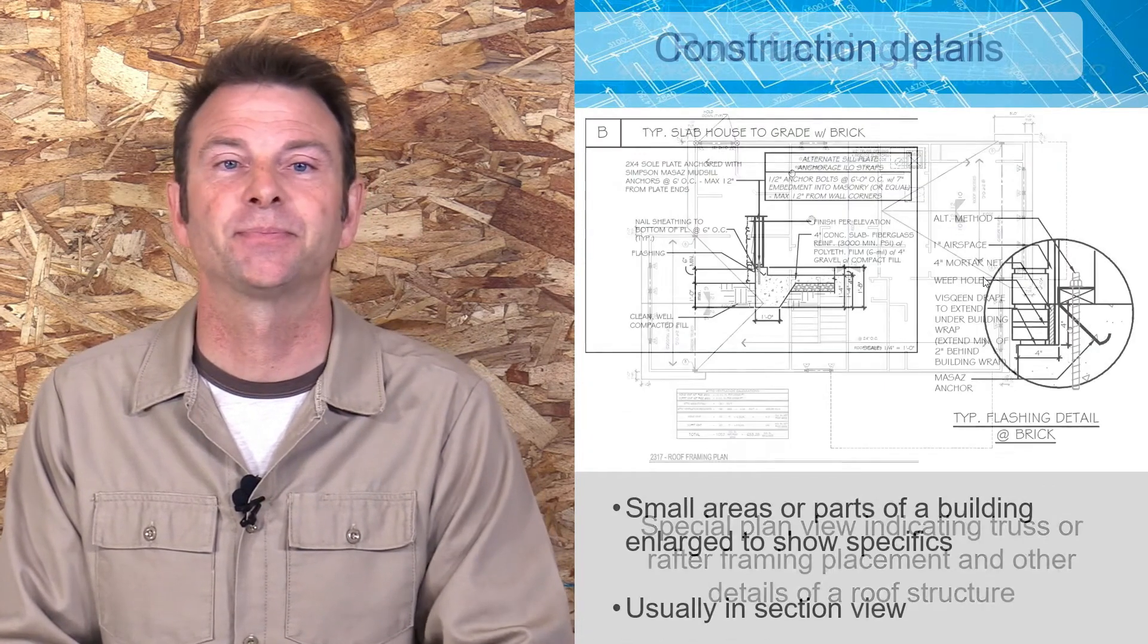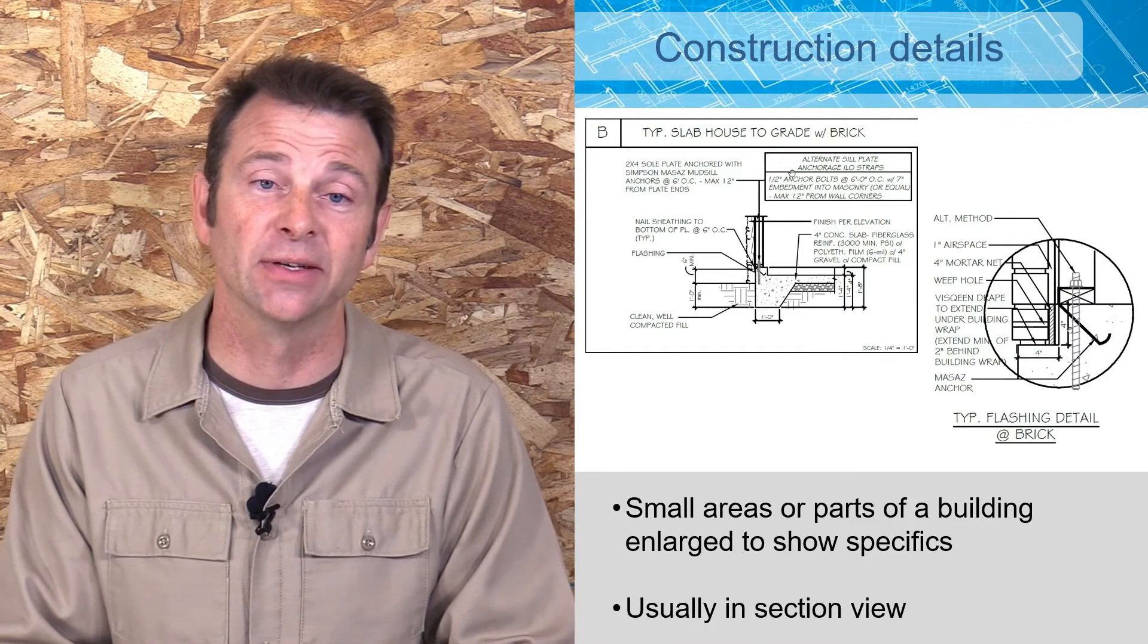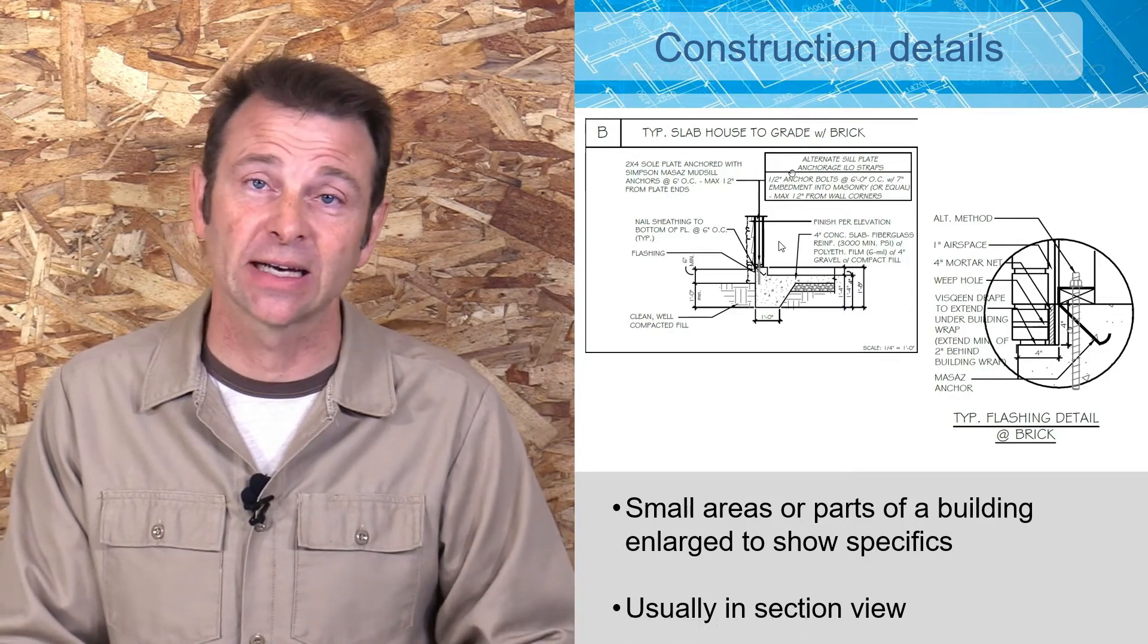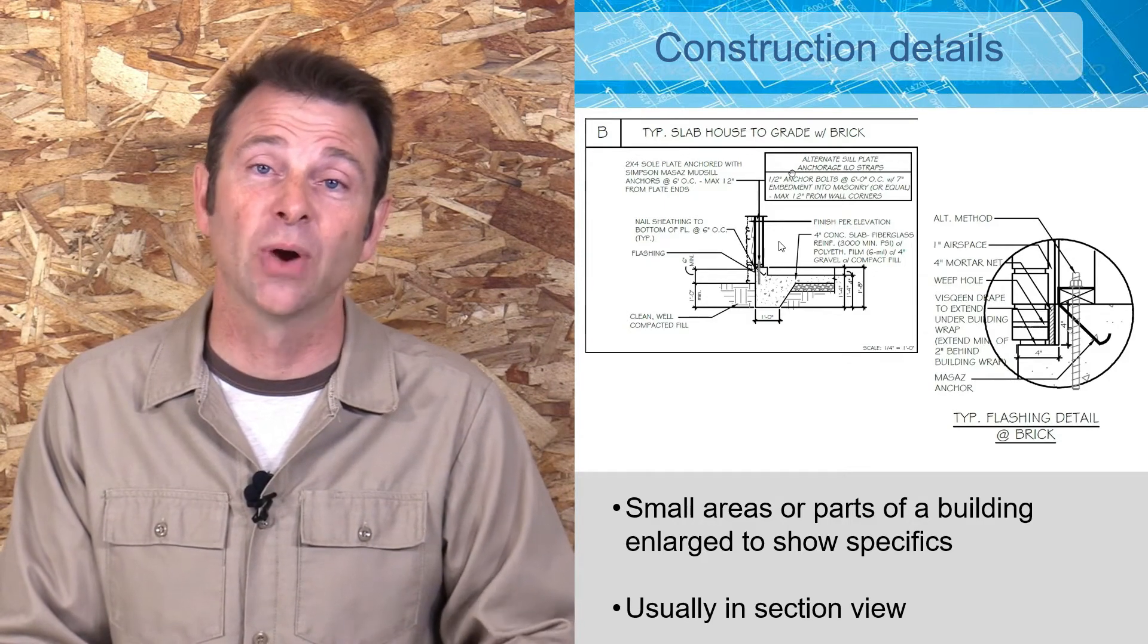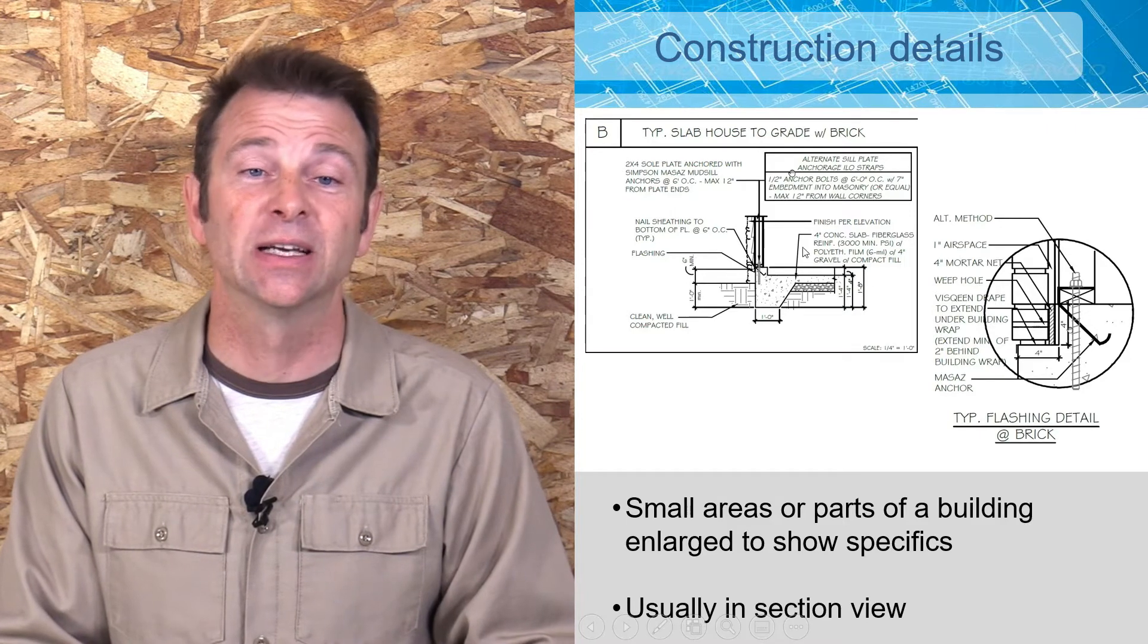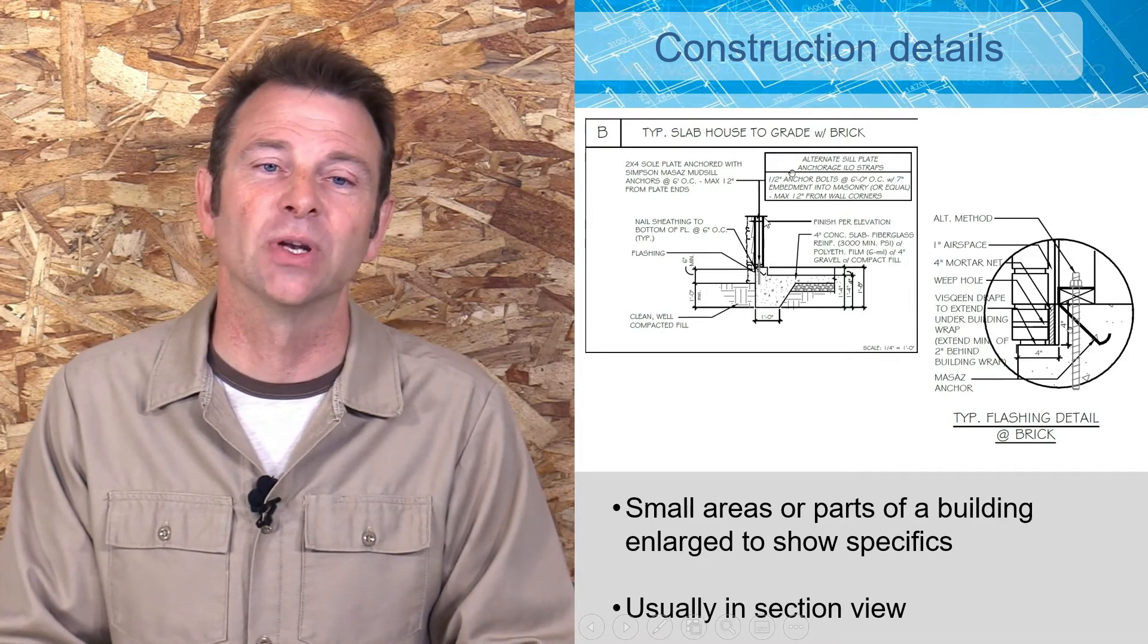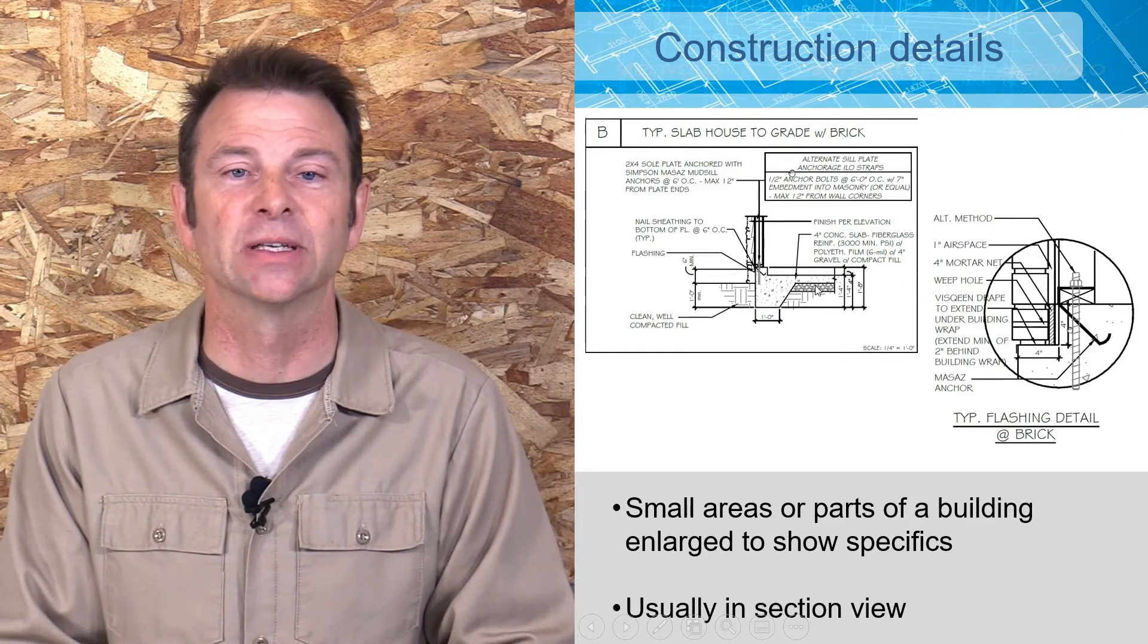Construction details, as I mentioned before when we were talking about notes, are very specific close-ups often in section. These would be section details - a cut through of a specific part of a building referenced from, say, a foundation plan. Here we have a specific reference of this detail and it's talking to us about specific things that would not be seen any other way than if we cut through here and looked inside of it.